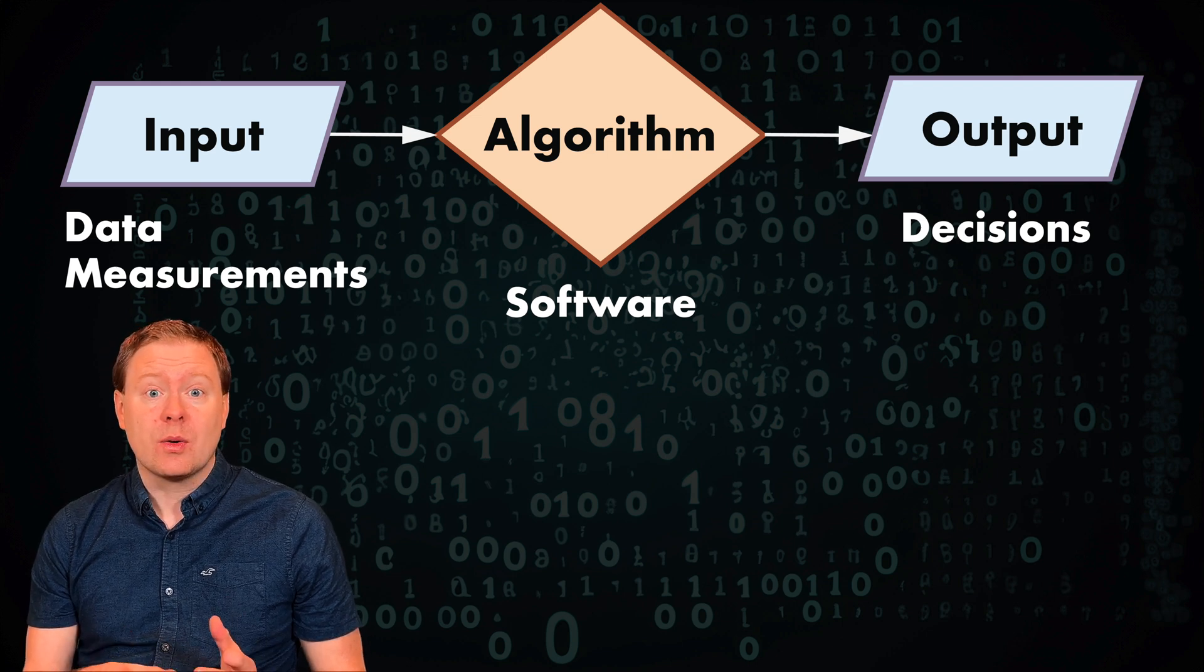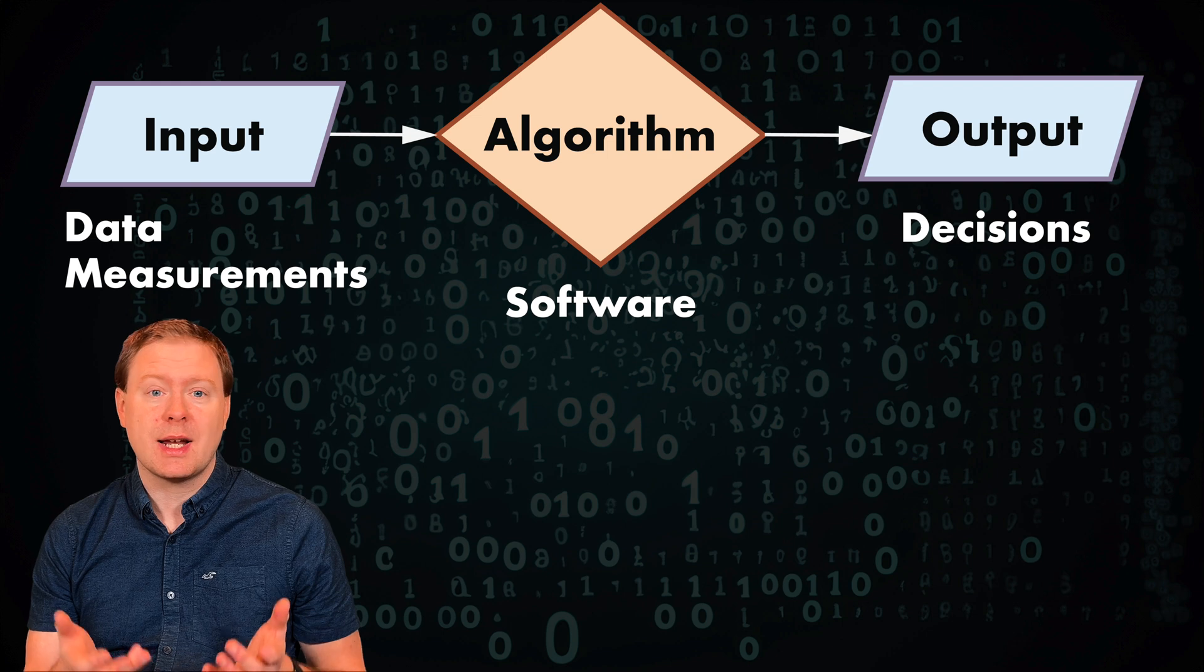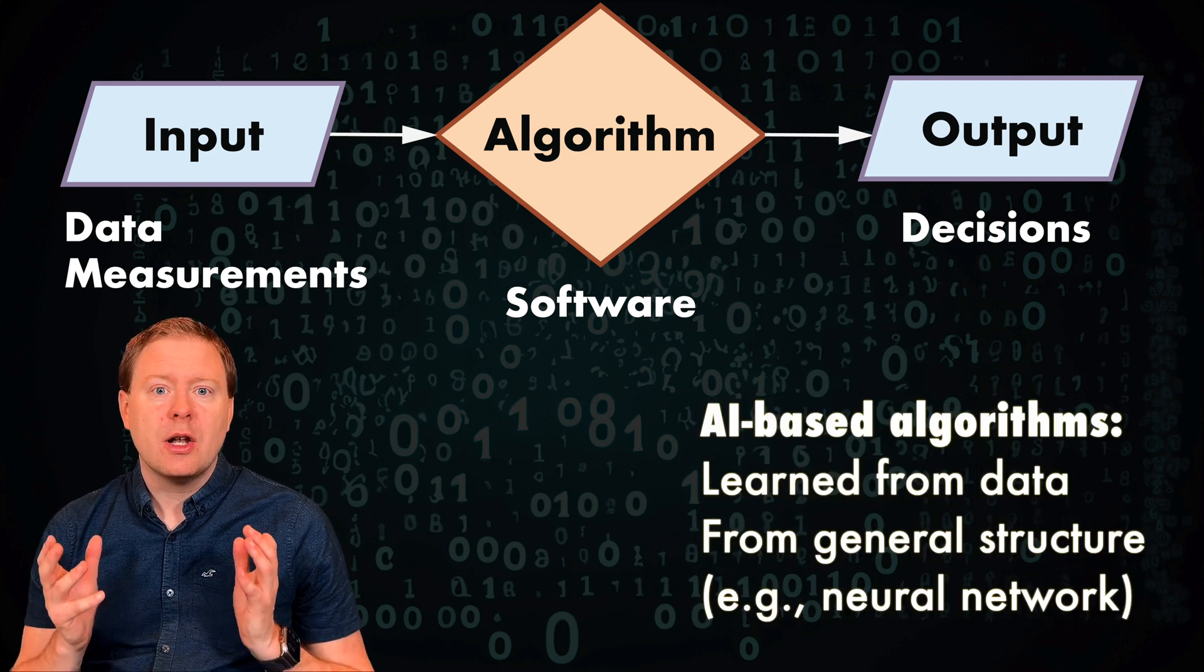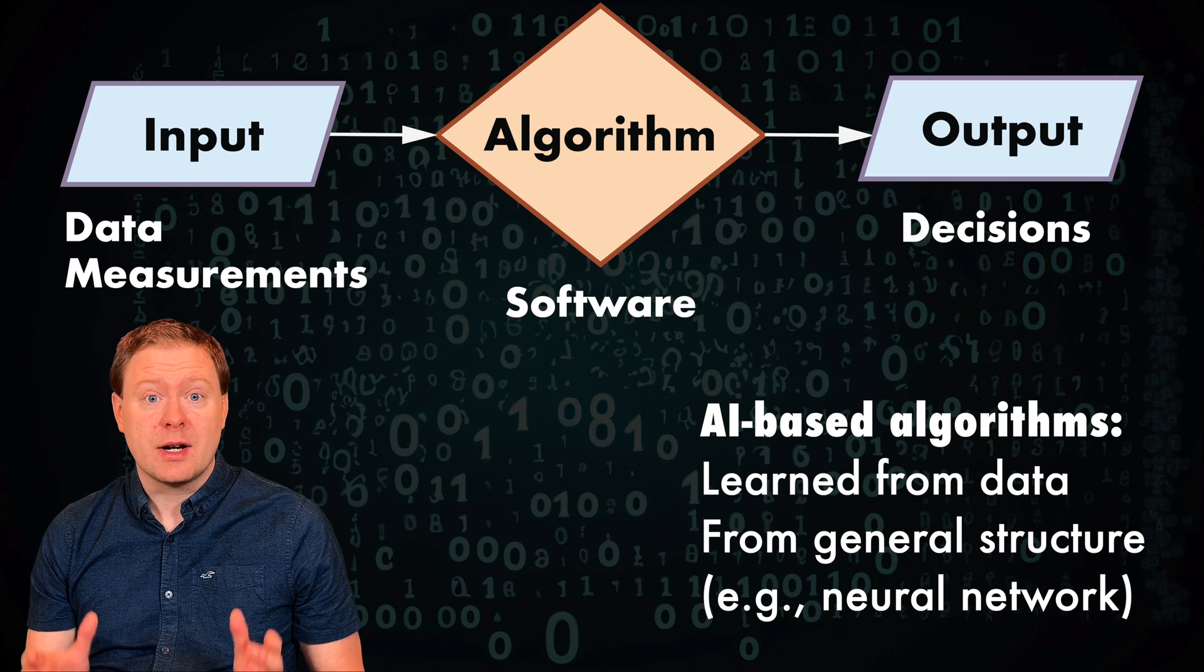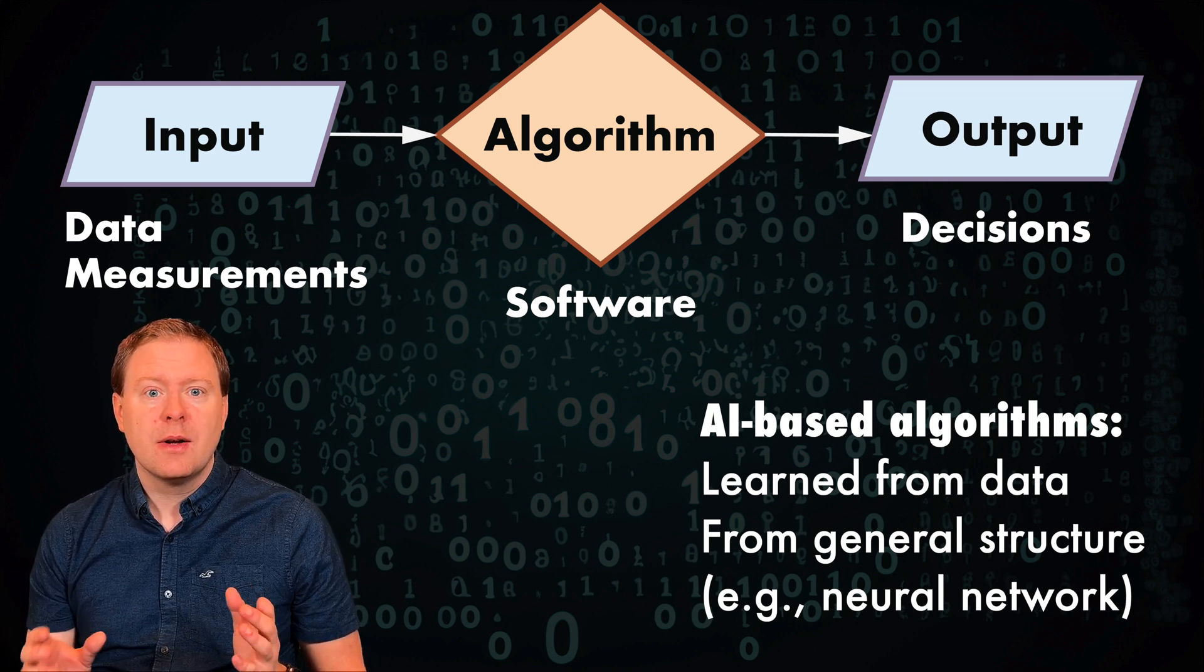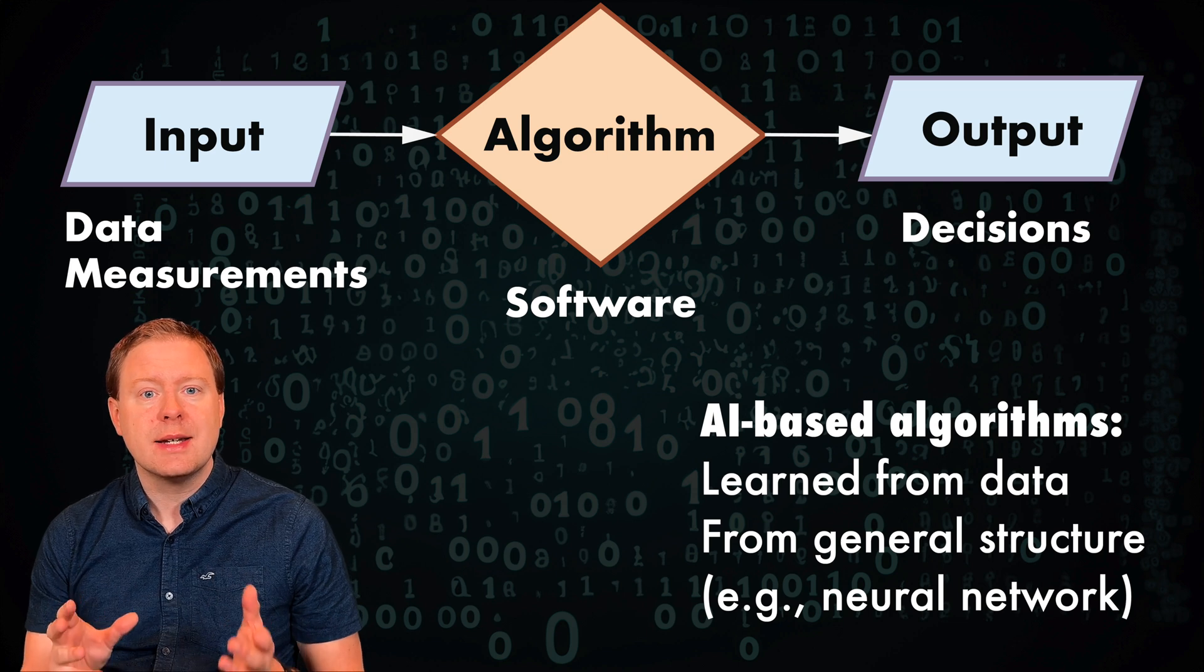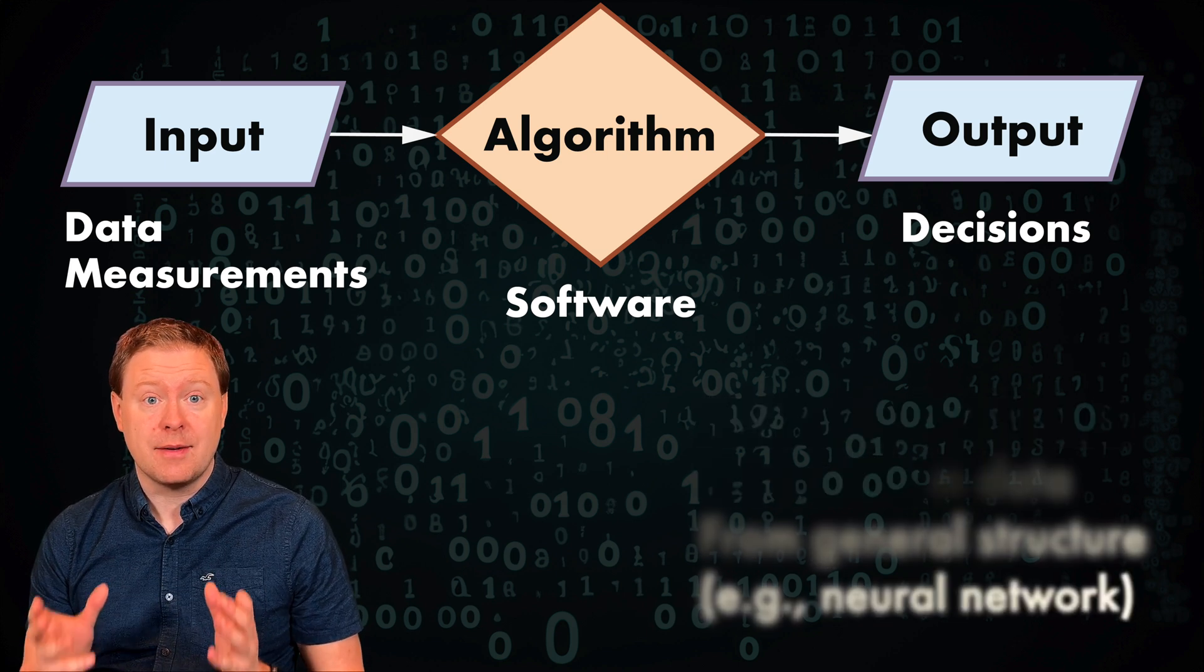However, AI or artificial intelligence or machine learning, which are names for the same things, are based on learning how to design algorithms in the computer. We are picking an algorithm structure that is very general, and then we let the computer figure out how to fine-tune the algorithm in order to come to the right decisions in an efficient way.